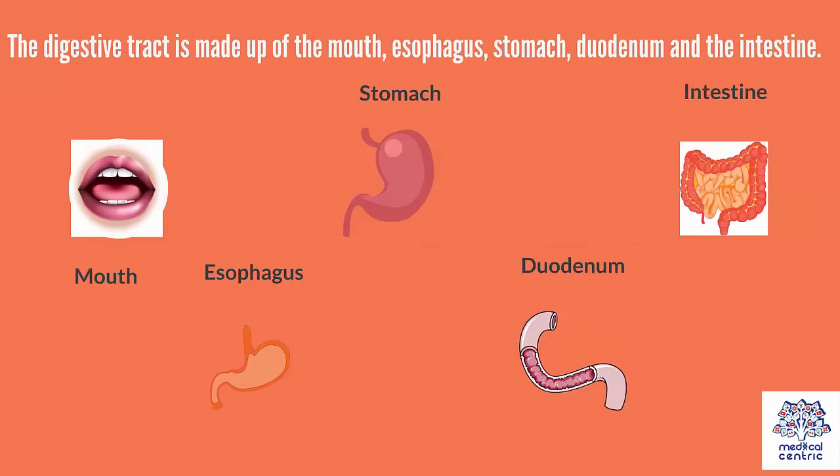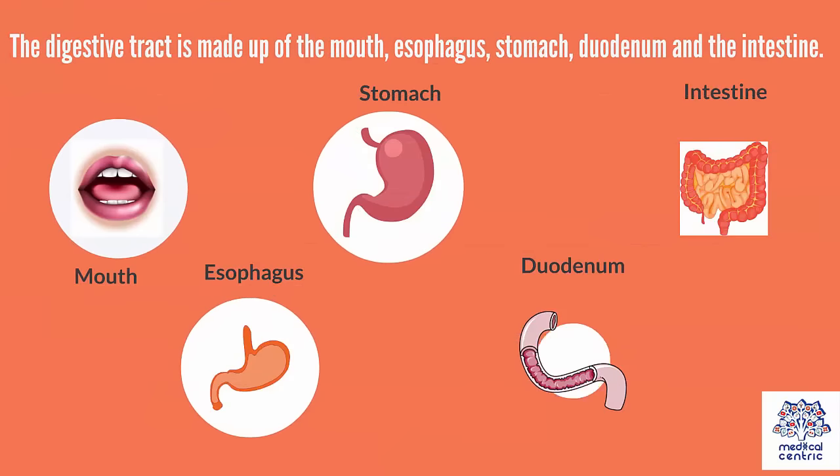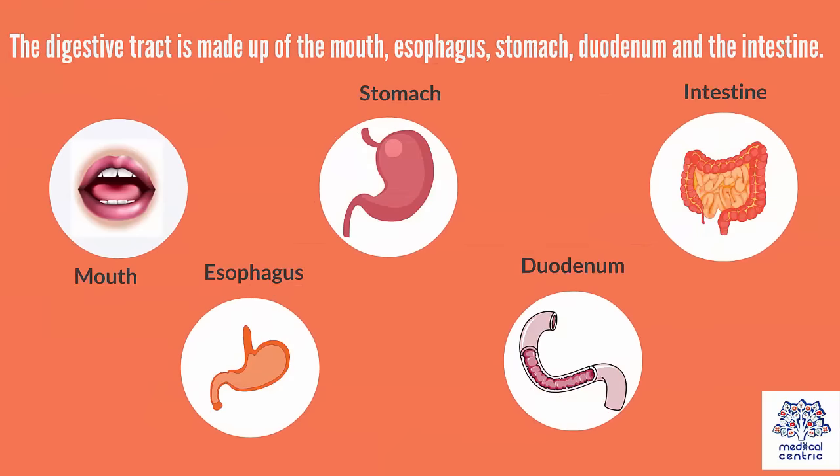The digestive tract is made up of the mouth, esophagus, stomach, duodenum, and the intestine.